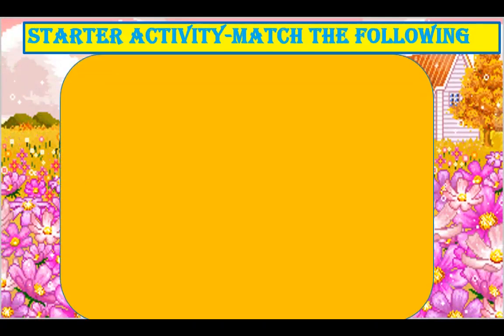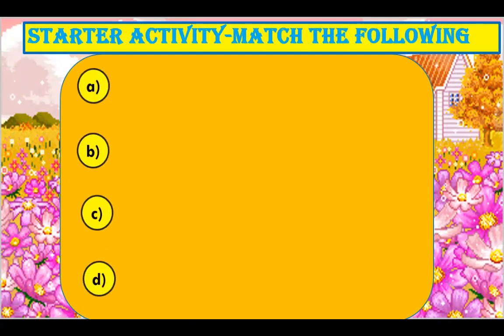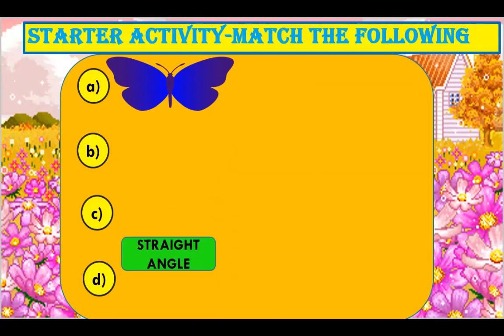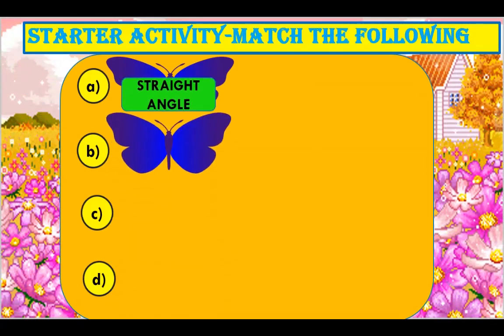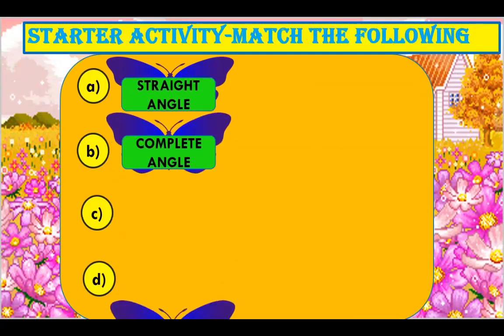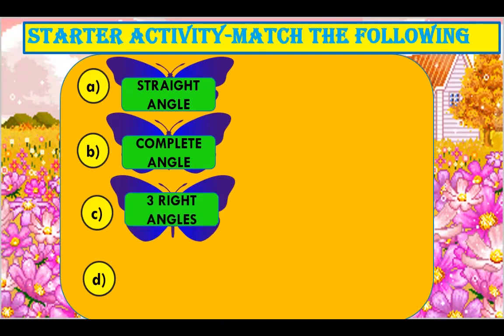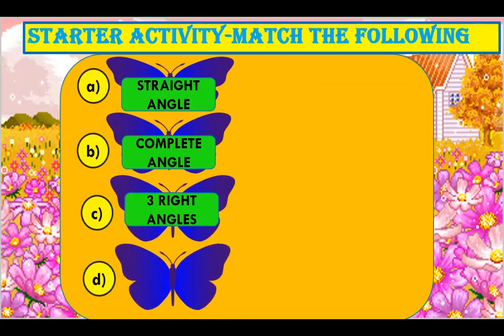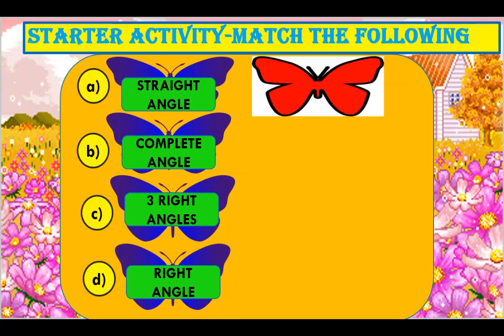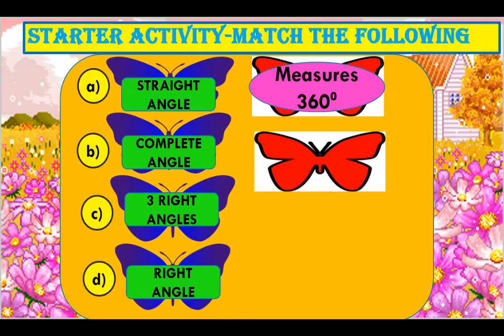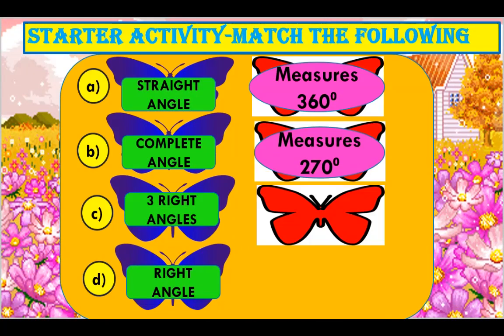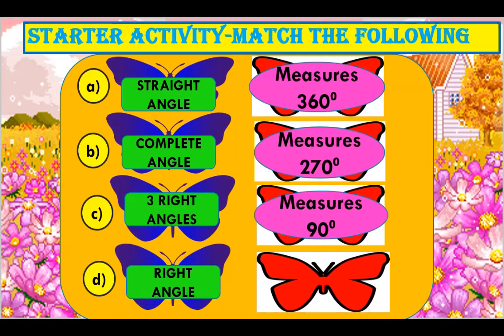Match the following. On one side you will see a few angles — that is right angle, straight angle, complete angle, three right angles and a right angle. And on the other side, what they measure. You have to match the angle with the correct measurement.